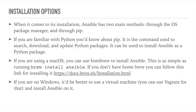Now let's see how we can install Ansible. When it comes to installation, Ansible has two main methods: either through the operating system package manager or through pip. Pip is the package manager used by Python — it is used to download and deploy third-party libraries used by Python. If you use Python in your administration tasks you can use pip, as it's an easy way to install Ansible. If not, you can use the operating system package manager — both are easy methods.